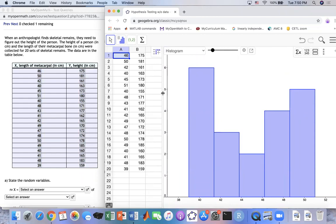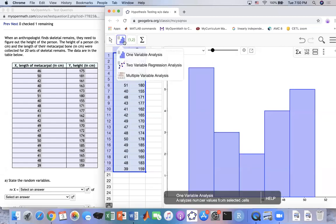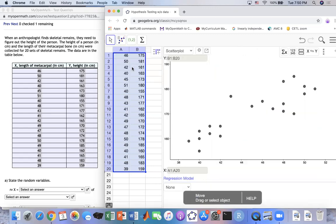First, you're going to highlight the data. Then you're going to select from this menu two variable regression analysis. It's going to have all this for you, the scatter plots right here.